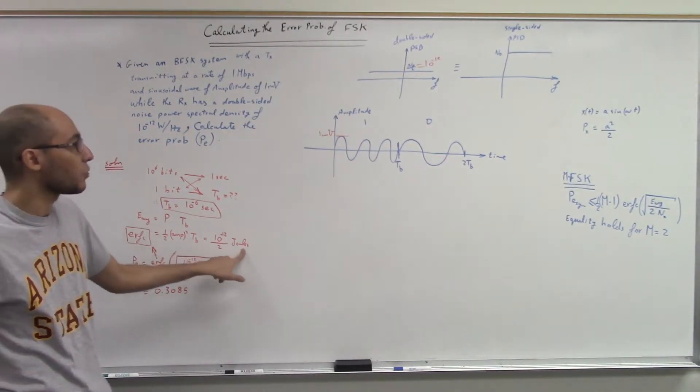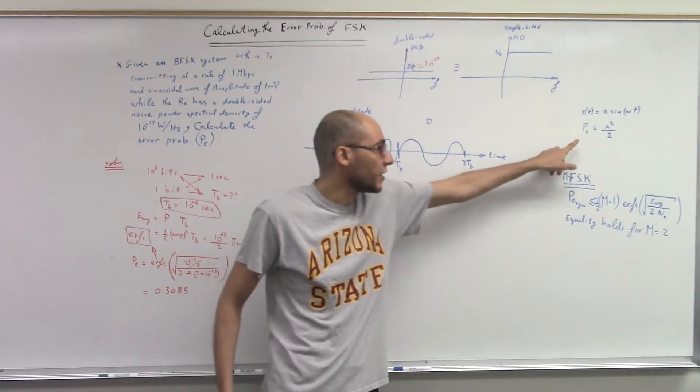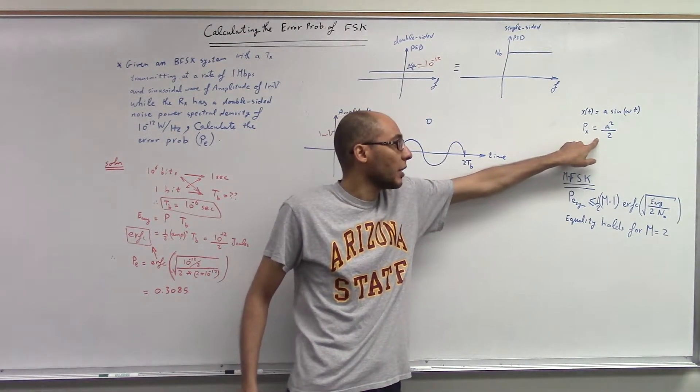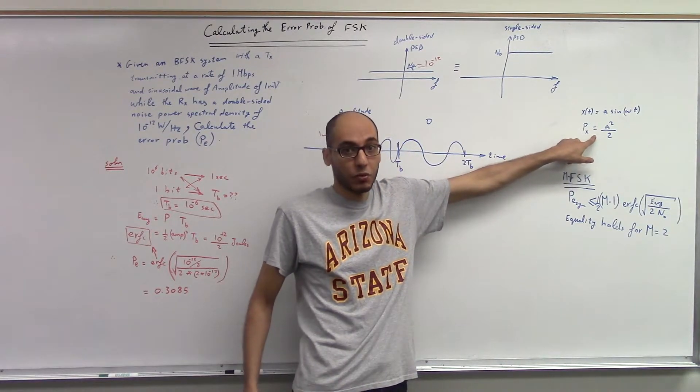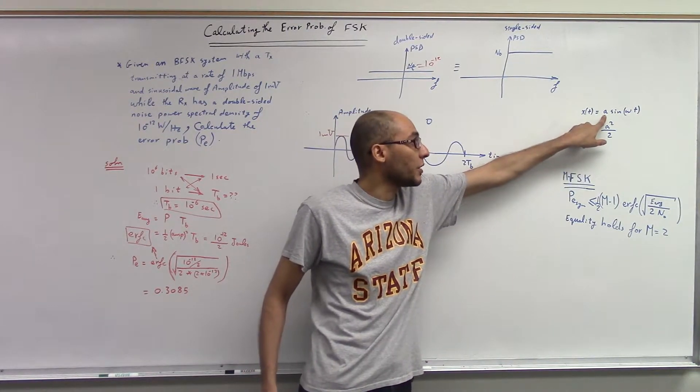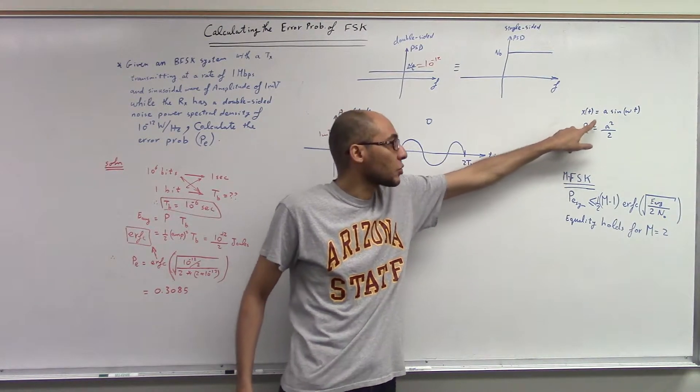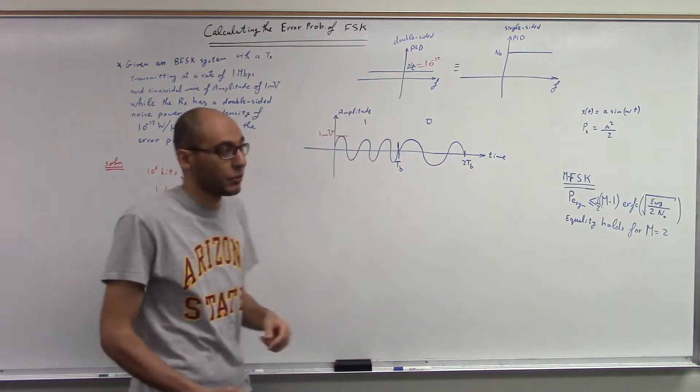Because we're assuming that the antenna at the receiver has one ohm. So this equation assumes that the antenna at the receiver has one ohm, because volt squared does not give you the value in watts, but volt squared over one ohm gives you the value in watts.